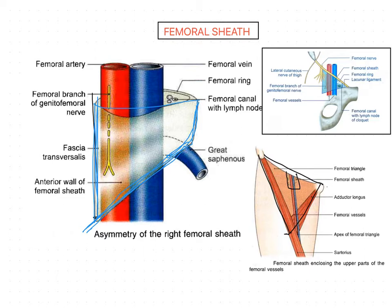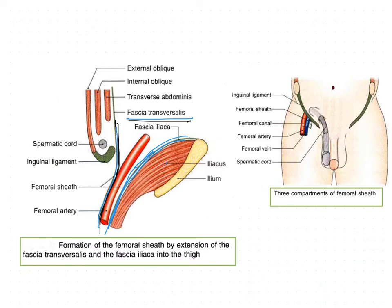Now we will see the compartments of the femoral sheath. The femoral sheath is divided into three compartments. The lateral compartment is the arterial compartment, and the middle one is called the venous compartment.